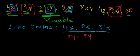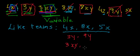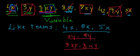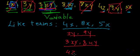Now let's talk about 3xy. There is one more term with xy, which is 8xy. So this is another set of like terms: 3xy and 8xy. Let us strike them out.